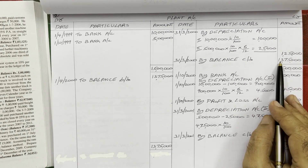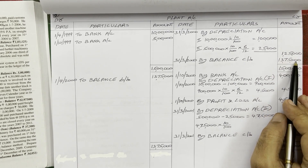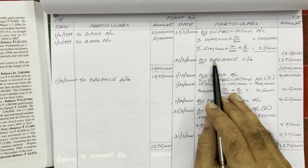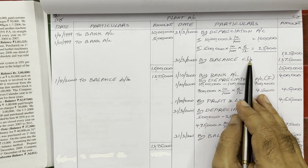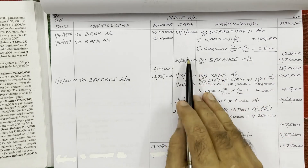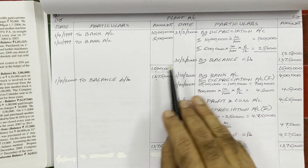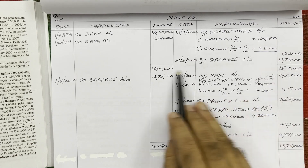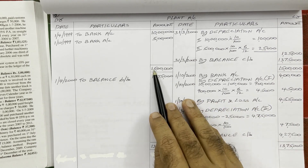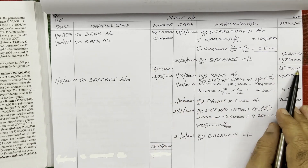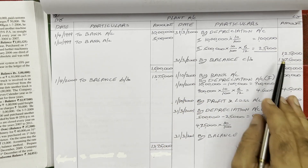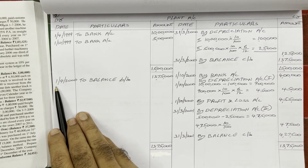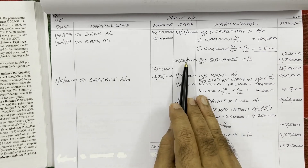Debit total 15 lakh rupees minus credit amount 1 lakh 25,000 equals 13 lakh 75,000. Write this as balance carried down on the last date of the year. Both sides total to 15 lakh.